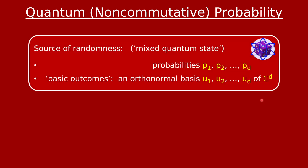So in quantum probability, the basic object is still a source of randomness, which I slangily call a quantum die. The correct name is mixed quantum state. Just like a classical die, it has d basic outcomes with associated probabilities p1, p2, up to pd. But with the classical die we just called the outcomes numbers 1 through d. For a quantum die, the basic outcomes are vectors — more specifically, to this quantum die is associated an orthonormal basis u1 through ud of d-dimensional space: d unit vectors that are mutually perpendicular.